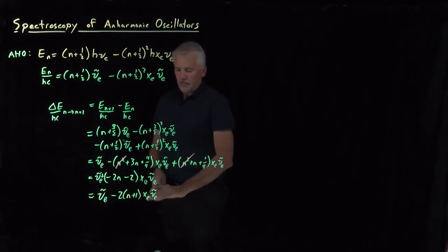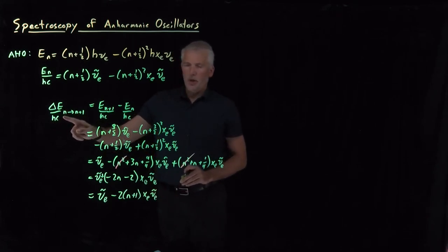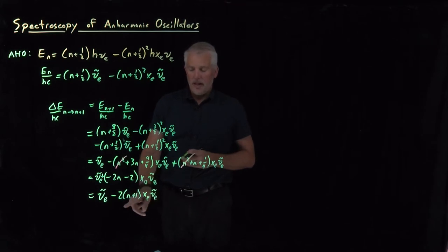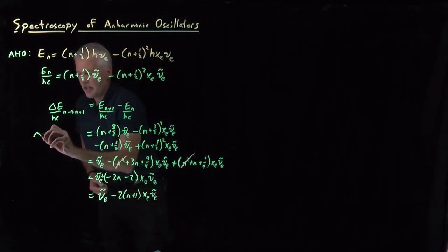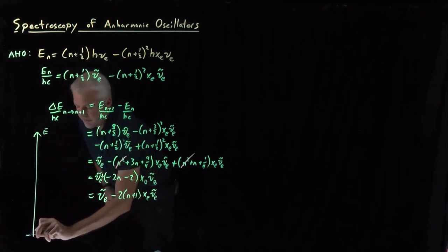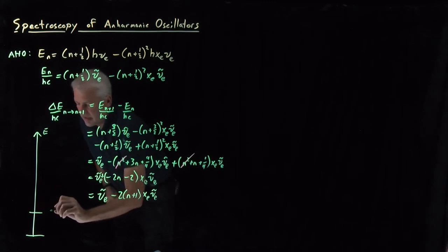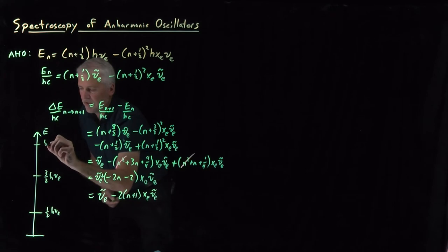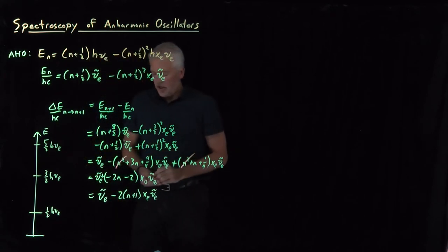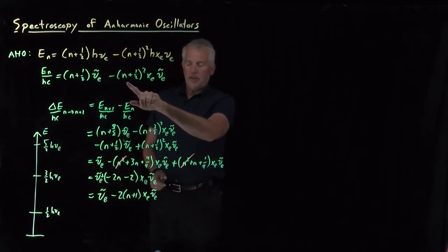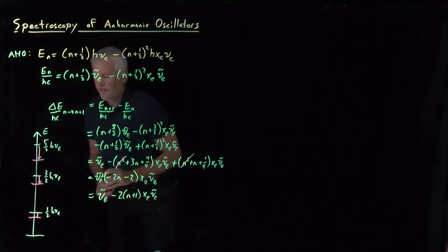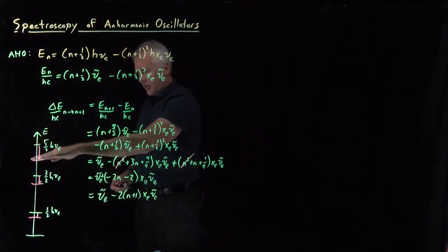Making sense of that equation: the energy in wavenumbers needed to go from one level to the next isn't just the harmonic oscillator frequency, but the harmonic oscillator frequency minus a little bit — and that anharmonicity correction depends on which level you're in; it gets larger as n gets larger. Drawing an energy ladder: the harmonic oscillator has evenly spaced levels at 1/2 h-nu, 3/2 h-nu, 5/2 h-nu, and so on. For the anharmonic oscillator, those energy levels all decrease — the lowest ones decrease a little, the upper ones decrease more, and the highest ones decrease even more.